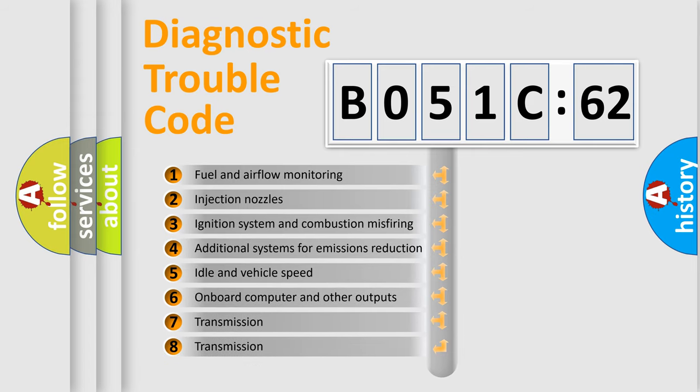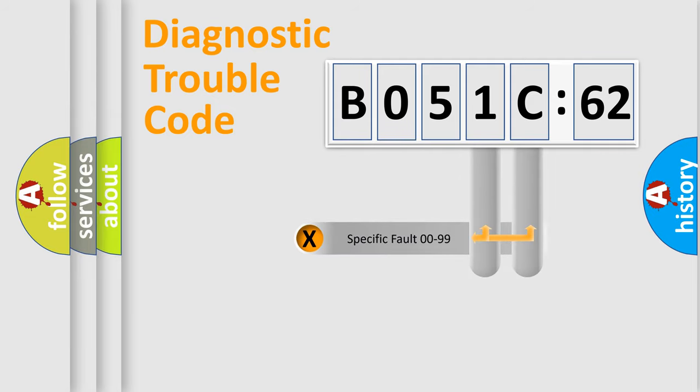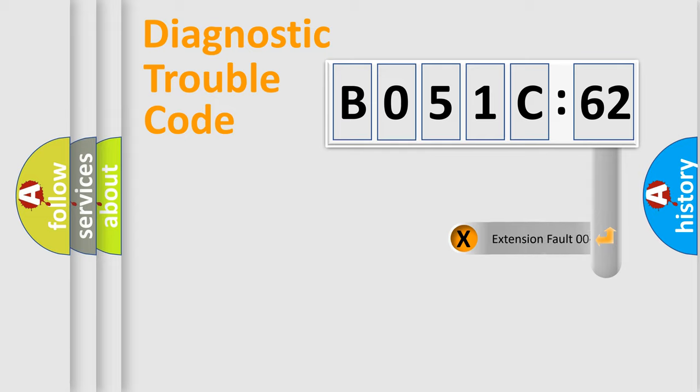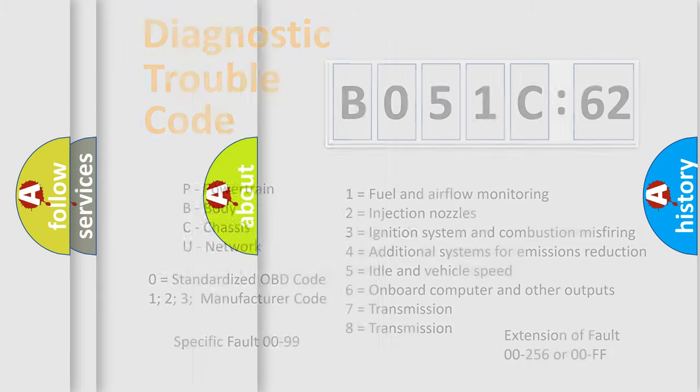The third character specifies a subset of errors. The distribution shown is valid only for the standardized DTC code. Only the last two characters define the specific fault of the group. The add-on to the error code serves to specify the status in more detail. For example, a short to the ground. Let's not forget that such a division is valid only if the second character code is expressed by the number zero.